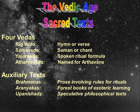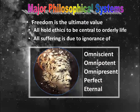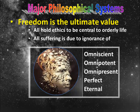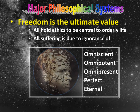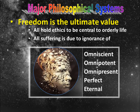The orthodox schools discussed here are those that accept the Vedas, and the heterodox school of Jainism, which does not. Freedom is the ultimate value in all schools of thought and is tied to self-knowledge. These schools differ in their claims of ontology — what exists — and how one has access to this freedom.